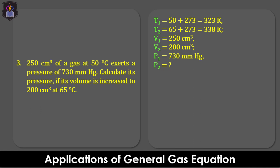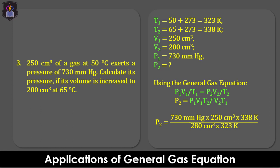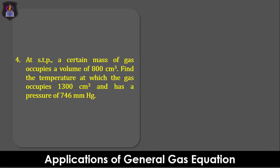Using the general gas equation P1V1 over T1 equals P2V2 over T2, making P2 the subject of the formula and evaluating the equation, we obtain 682.1 millimeters of mercury as the final pressure of the gas.